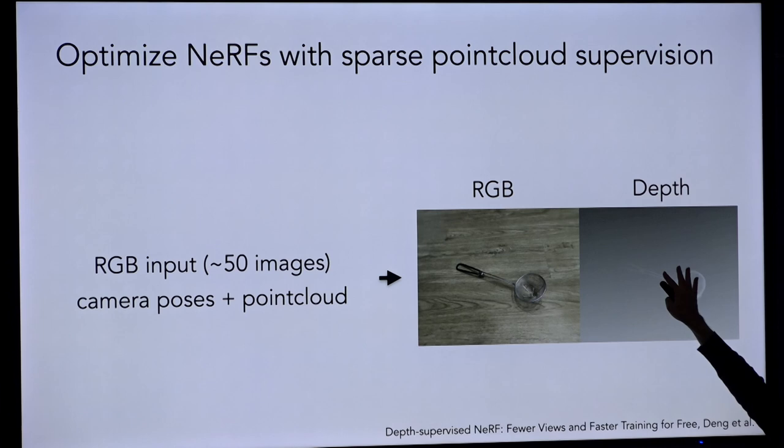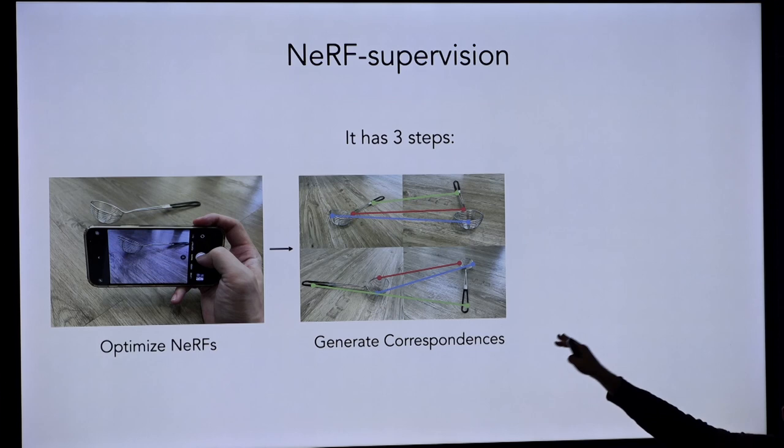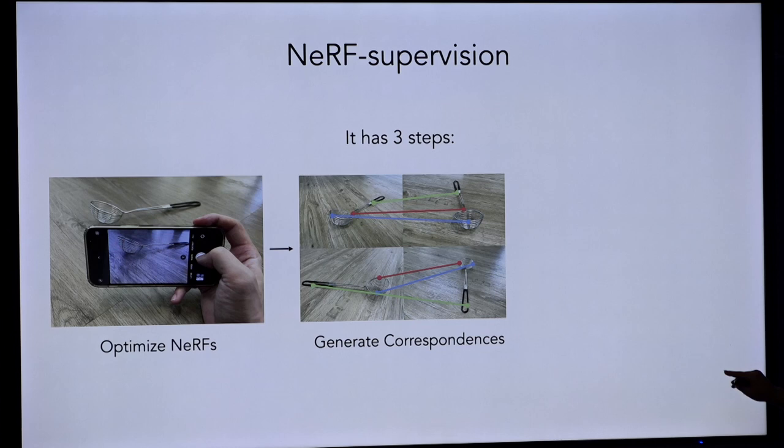Once you have that type of data, we realize this is exactly the kind of data needed to train view-invariant computer vision algorithms. Many computer vision algorithms want multiple views of the same thing to learn a representation invariant to how you're viewing an object. You also need that all views are in correspondence — for every pixel in one view, what are the corresponding pixels in other views? Where does the end of that strainer appear in every single image? That correspondence is exactly the supervision needed for a popular class of algorithms.